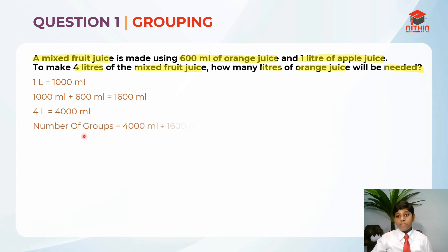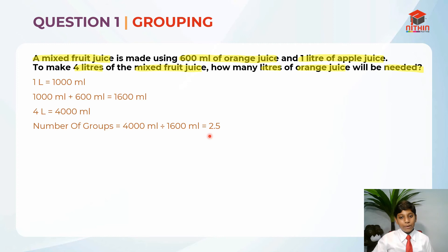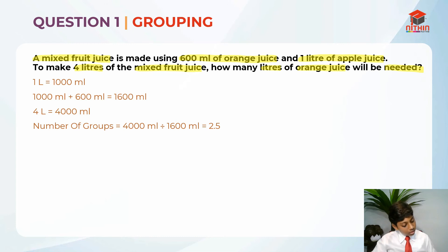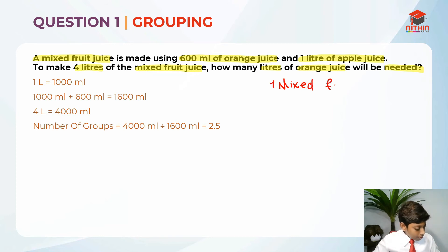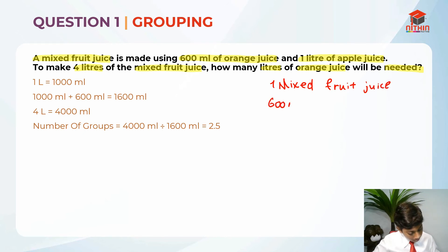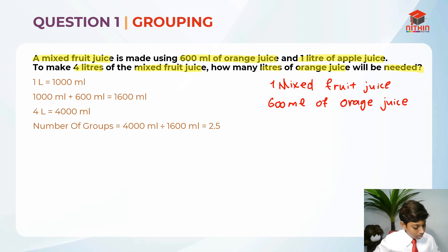Now it's where the concept of grouping kicks in. Just like last time, let me explain what grouping means. In this case, grouping means how many 1600 ml does it take to make 4000 ml. So it takes 2.5 groups. You have to remember that in 1 mixed fruit juice, there is 600 ml of orange juice and 1 liter of apple juice.